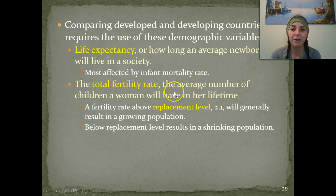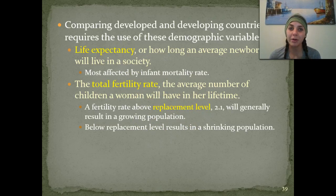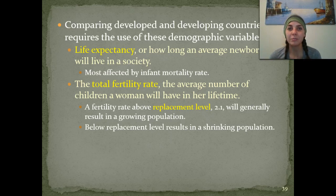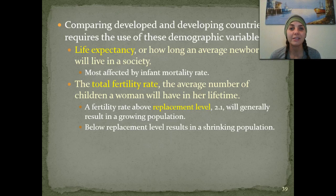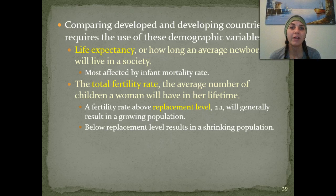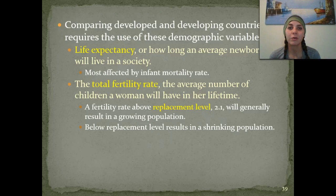A fertility rate above the replacement level means the population grows. The replacement level basically says that if a woman has two children, those two children — once the parents die — will replace them. There's not going to be any difference in that population. However, if that woman had three kids, we're going to have a total net gain of one to the population. Vice versa, if that woman only had one child, when the man and woman die there's going to be a net loss of one individual for the whole human population.